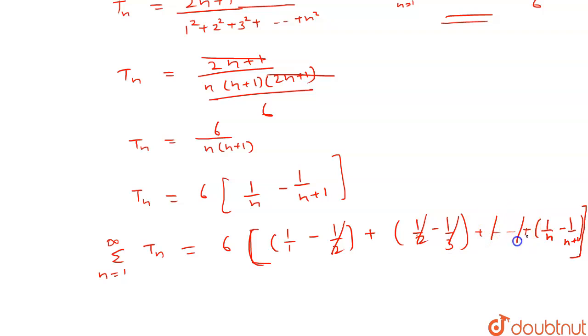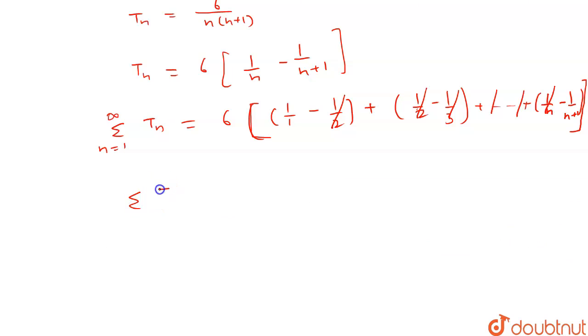Similarly, this will cancel out with first term of this, and the last second term will cancel out with this. And at last, 1 upon n plus 1 will be left. So summation of Tn from n equals 1 to infinity will be equals to 6 into 1 minus 1 upon n plus 1.